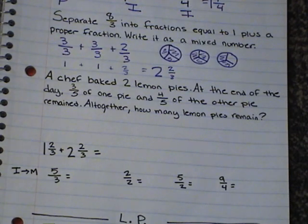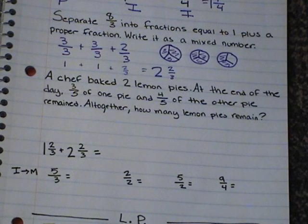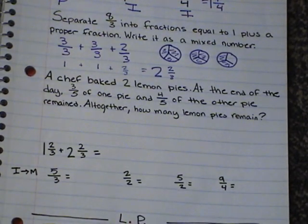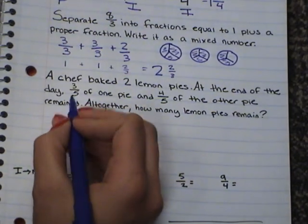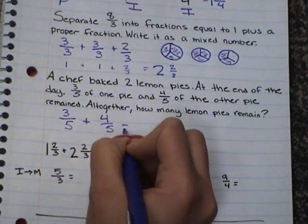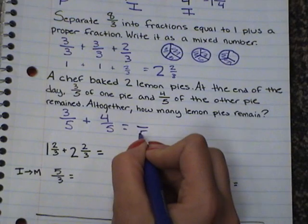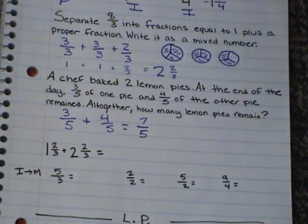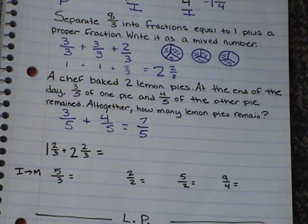Our next example: a chef baked 2 lemon pies. At the end of the day, 3 fifths of 1 pie and 4 fifths of the other pie remained. Altogether, how many lemon pies were left? So we have 3 fifths plus 4 fifths. The denominator stays the same — 3 pieces plus 4 pieces equals 7 pieces, so 7 fifths. Sometimes that would be okay as an answer, but here we need to change it into a mixed number because it's an improper fraction — the top number is bigger than the bottom.